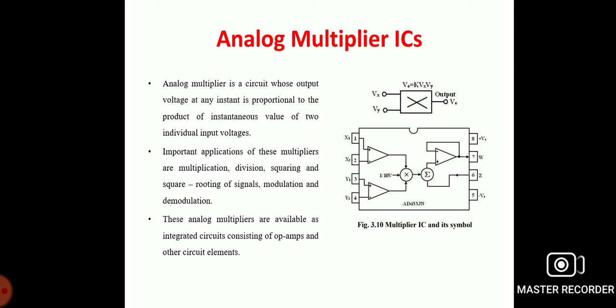The typical range of the two input signals is plus or minus 10 volts. In the schematic representation, the output V-naught is the product of the two inputs Vx and Vy divided by a reference voltage V-ref. Normally, V-ref is internally set to 10 volts, so the output voltage equals Vx times Vy divided by 10.